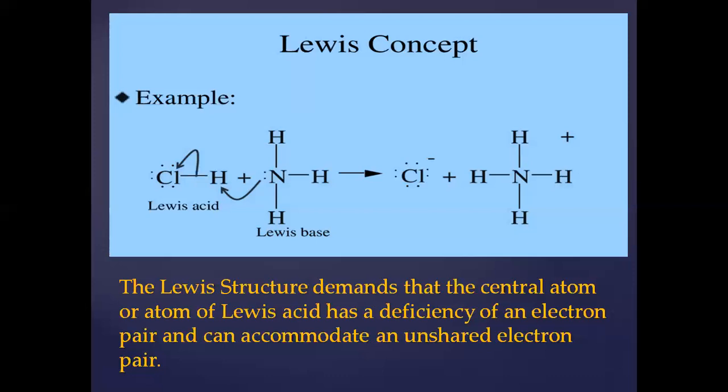The Lewis structure demands that the central atom or atom of Lewis acid has a deficiency of an electron pair and can accommodate an unshared electron pair. The Lewis structure shows the central atom or the Lewis acid atom will have a deficiency of electron pair and the electron pair will be unshared. In the case of Lewis base, the octet will be complete and there will be more unshared pairs of electrons which will be able to donate to Lewis acid.